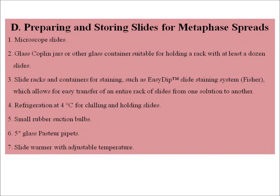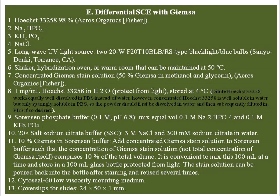For preparing and storing slides for metaphase spread: microscopic slides, glass coupling jars, slide racks, refrigeration at 4°C, small rubber section bulb, 5-inch glass Pasteur pipettes, and a slide warmer with adjustable temperature. For differential sister chromatid staining with Giemsa: disodium hydrogen phosphate, potassium phosphate, sodium chloride, a long-wave UV light source, shaker, hybridization oven, concentrated Giemsa stain solution, Sorensen phosphate buffer, and Cytoseal coverslips for slides.